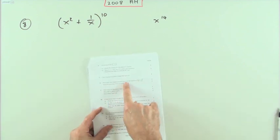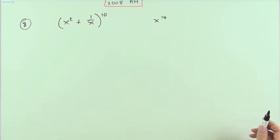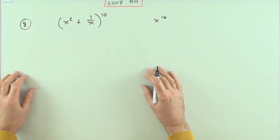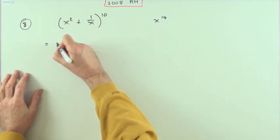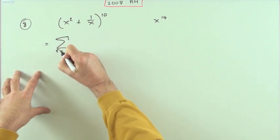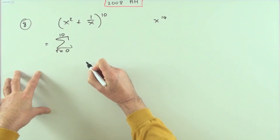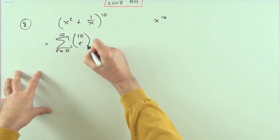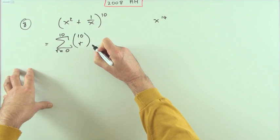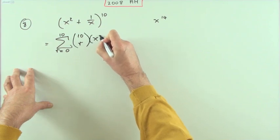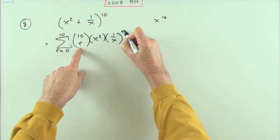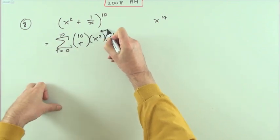That's why the question says, for the first part: write down the general term in the expansion. The general term is much like writing this expansion using sigma notation. So using sigma notation, starting from r equals zero and going to 10, it would be the combination 10-choose-r of the two parts in the binomial — the first part being x squared, the second part being positive one over x.